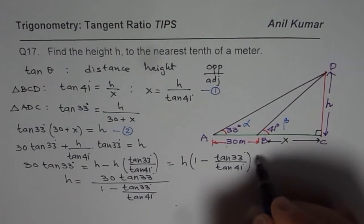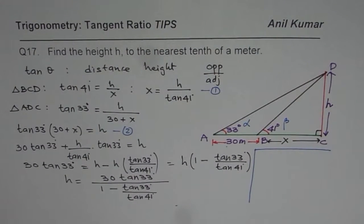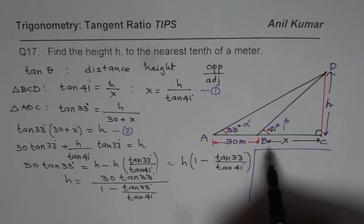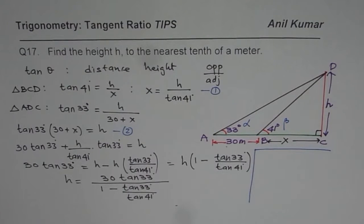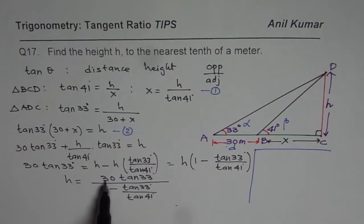In that case, if these angles are α and β, and this side is given to us as distance D, I am replacing 30 with D. So in that case I can write this formula.